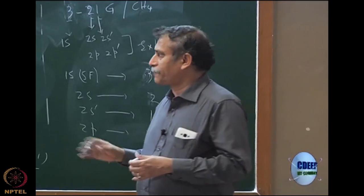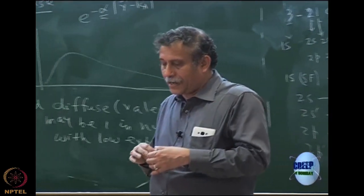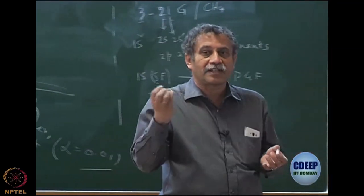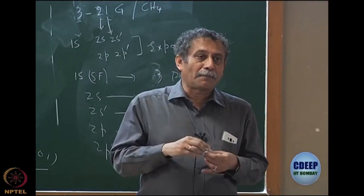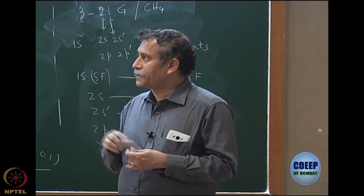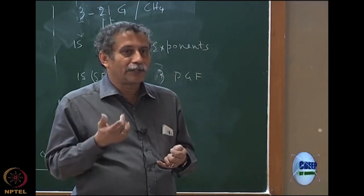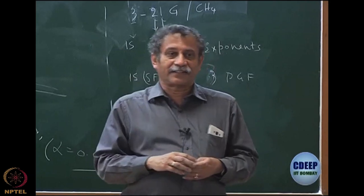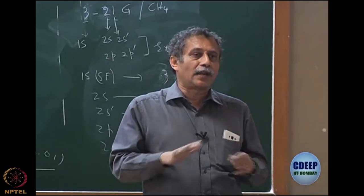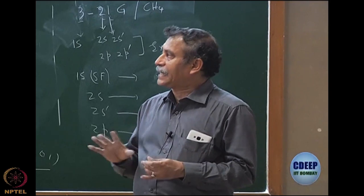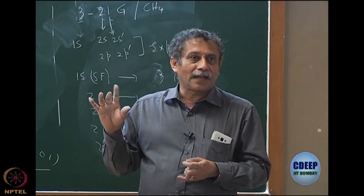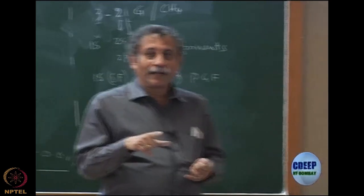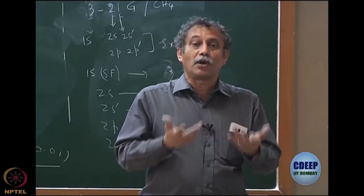I just wanted to tell you the philosophy of the basis set before I close this part. Now what we will do is go beyond Hartree-Fock. But before that, we still have to discuss some properties of Hartree-Fock. One important property I will start with after the mid-semester exam is Brillouin's theorem — a very important theorem, just like Koopmans', which comes out of Hartree-Fock. There will also be discussions of Hartree-Fock that highlight its deficiencies — why should we go beyond Hartree-Fock?